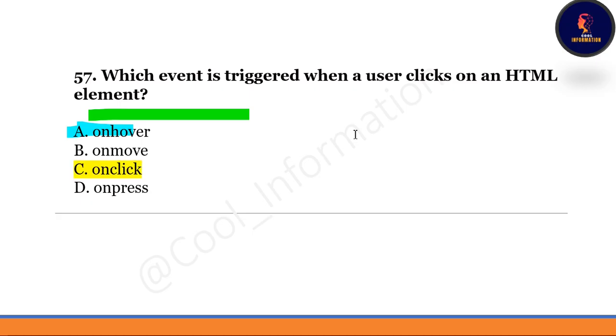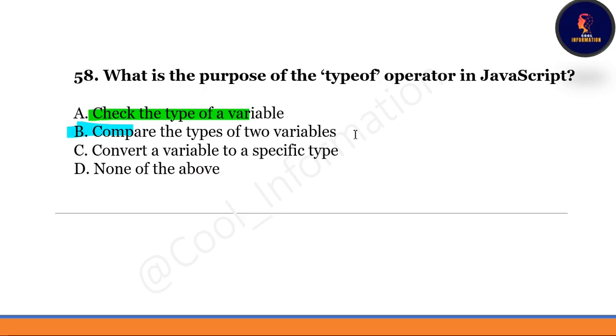Next question: which event is triggered when a user clicks on an HTML element? Option C is correct — the onClick event is triggered when a user clicks on an HTML element.